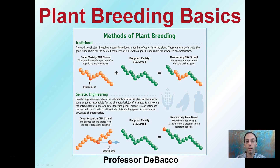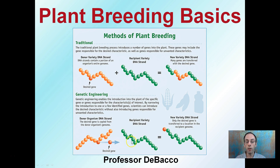Here I'm going to go over the very basics of plant breeding. First and foremost, there are kind of two ways to look at this. There's the traditional way, which is what I'm going to focus on here, where you have a donor variety strand and a recipient, getting that mix of a new variety. And we have genetic engineering, where we're taking a very specific desired gene and very precisely inserting it into the DNA sequence.